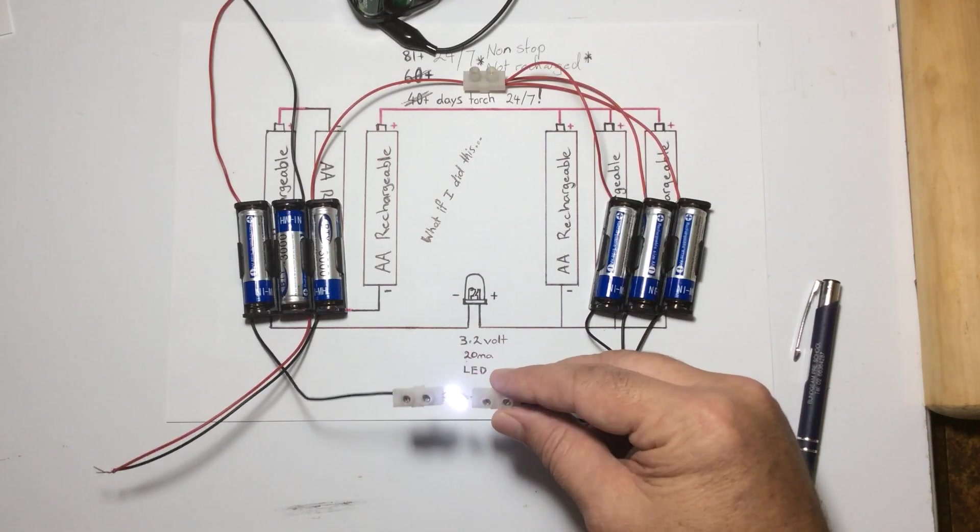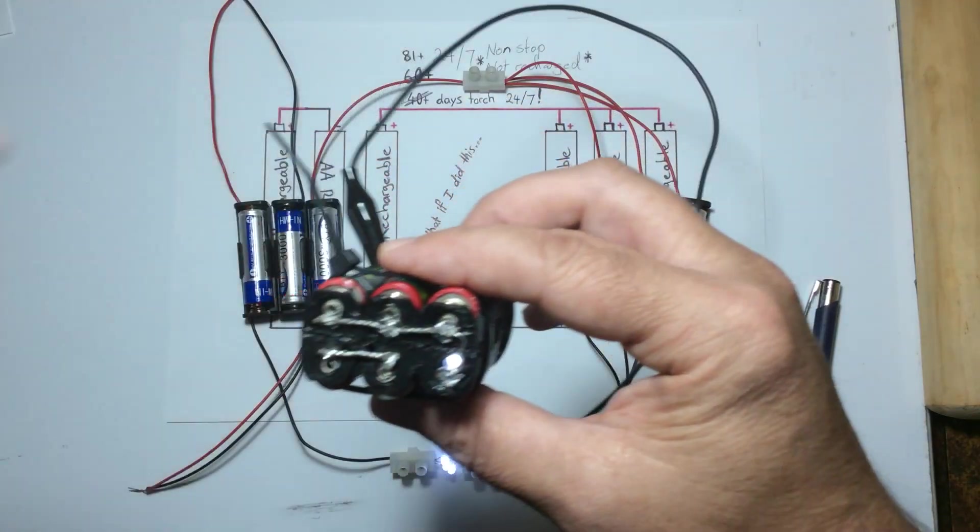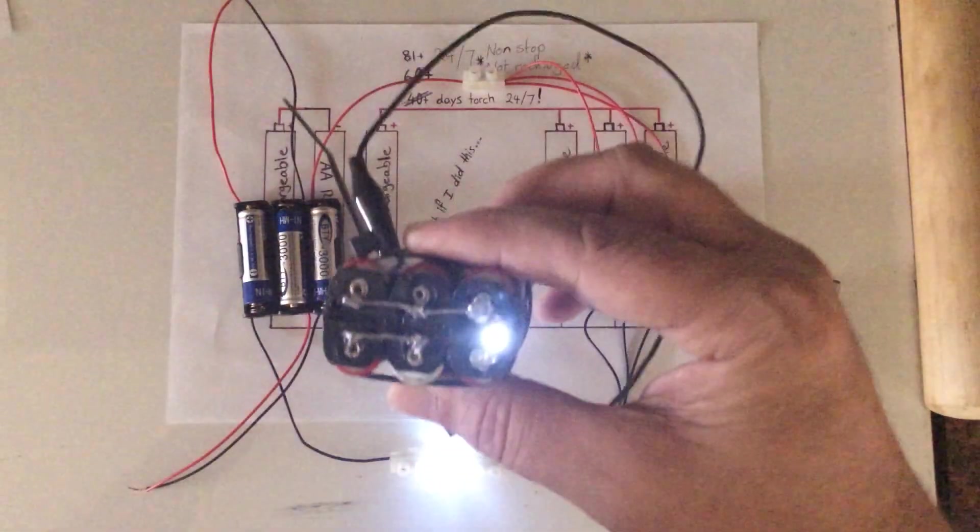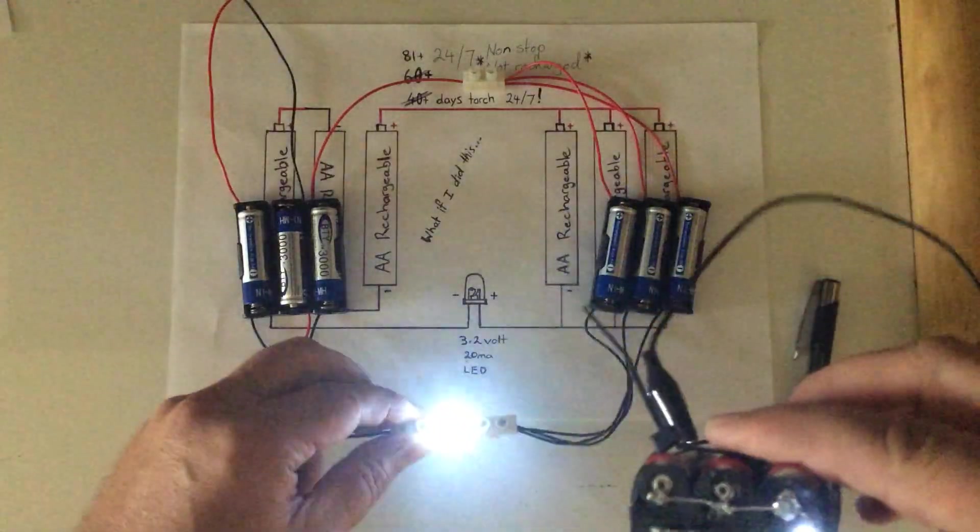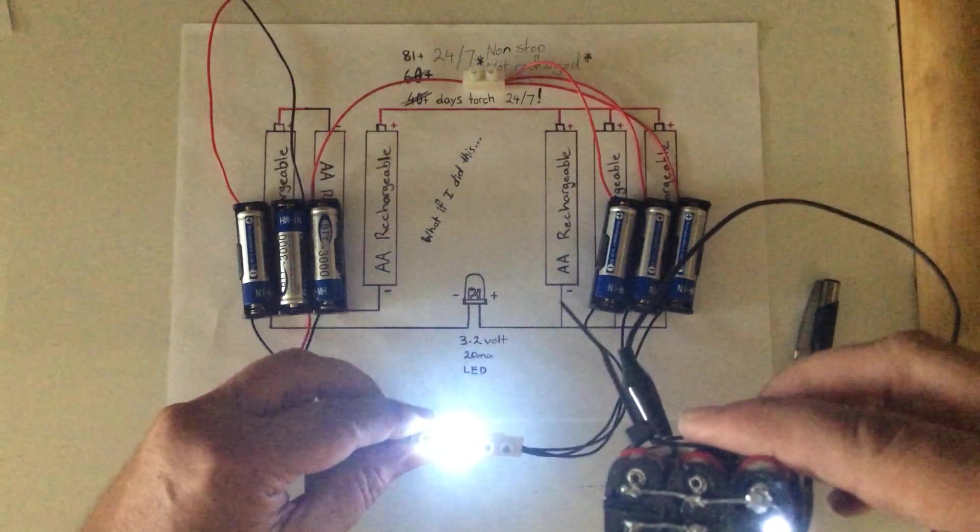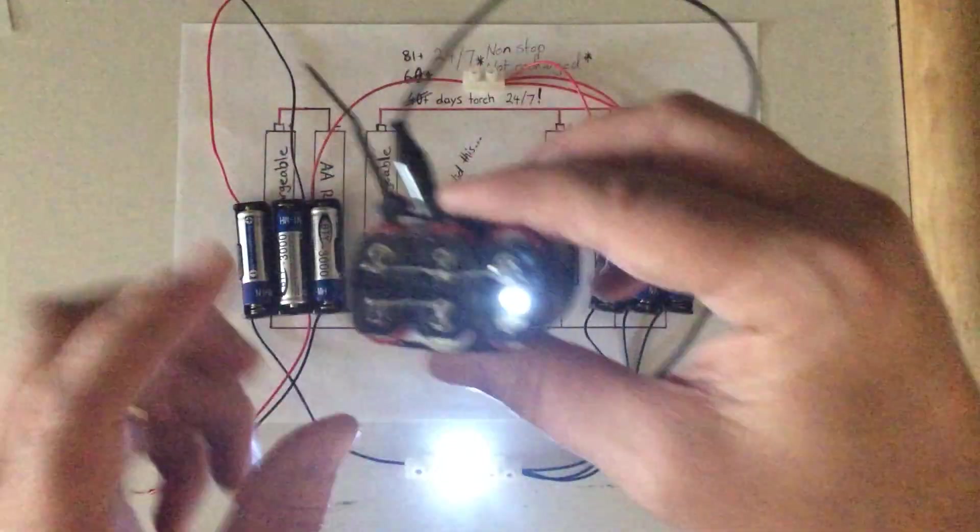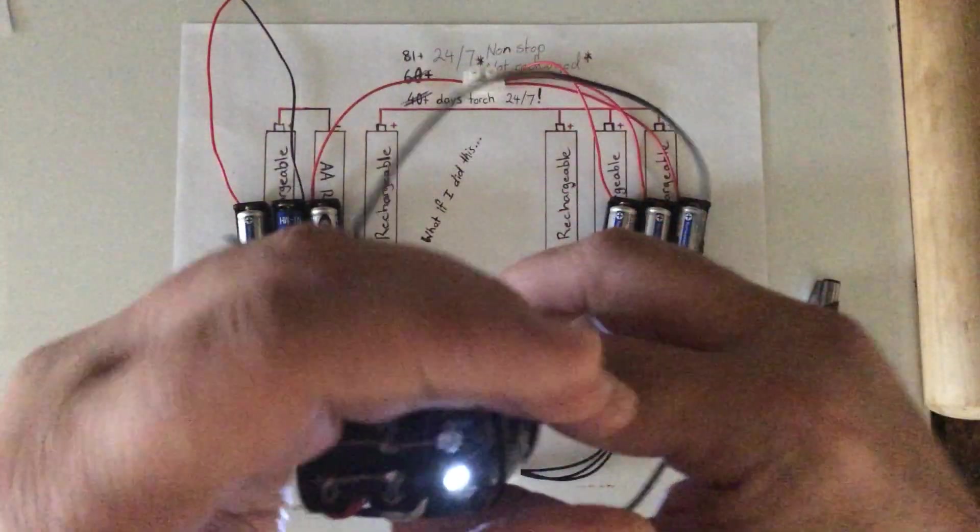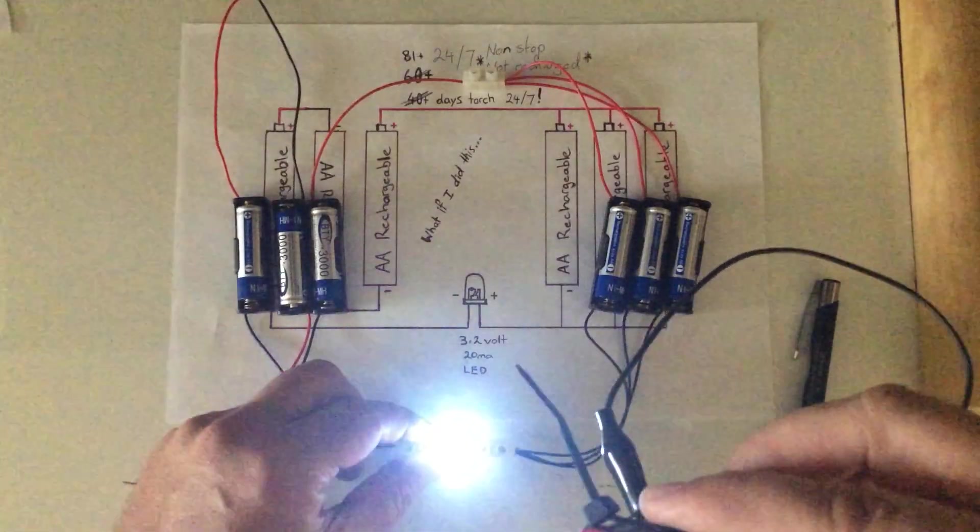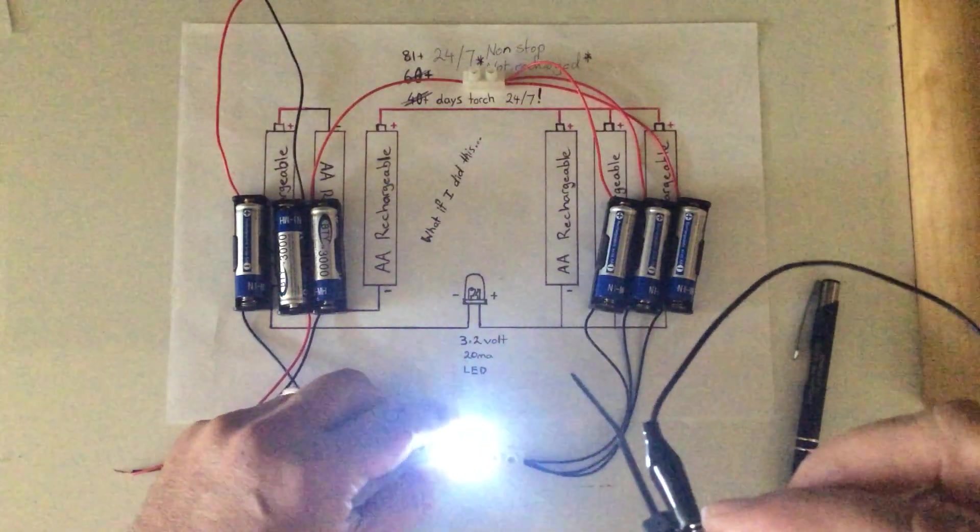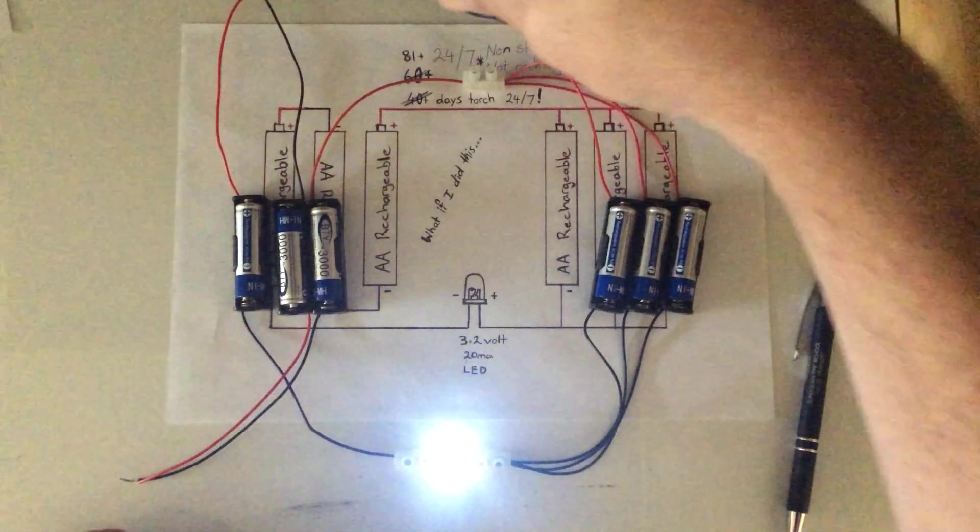So that's what it looks like at start of the test and then 81 days later, that is the brightness of one bulb there. Whereas this one here I've got three bulbs. It was mentioned to me that that might not be quite as practical as your standard torch, and most standard torches have three LEDs there.